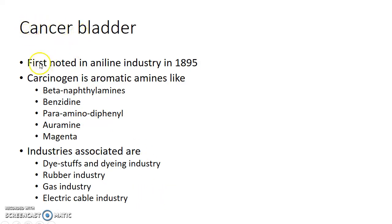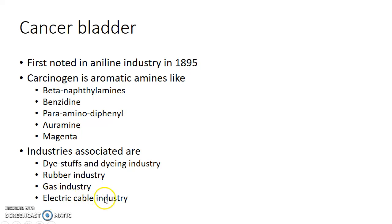Cancer bladder was first noted in the aniline industry in 1895. The carcinogen responsible for cancer bladder is aromatic amines. Aromatic amines include beta-naphthylamine, benzidine, para-amino diphenyl, auramine and magenta. The industries associated with cancer bladder are dye stuffs and dyeing industry, rubber industry, gas industry and electric cable industry.